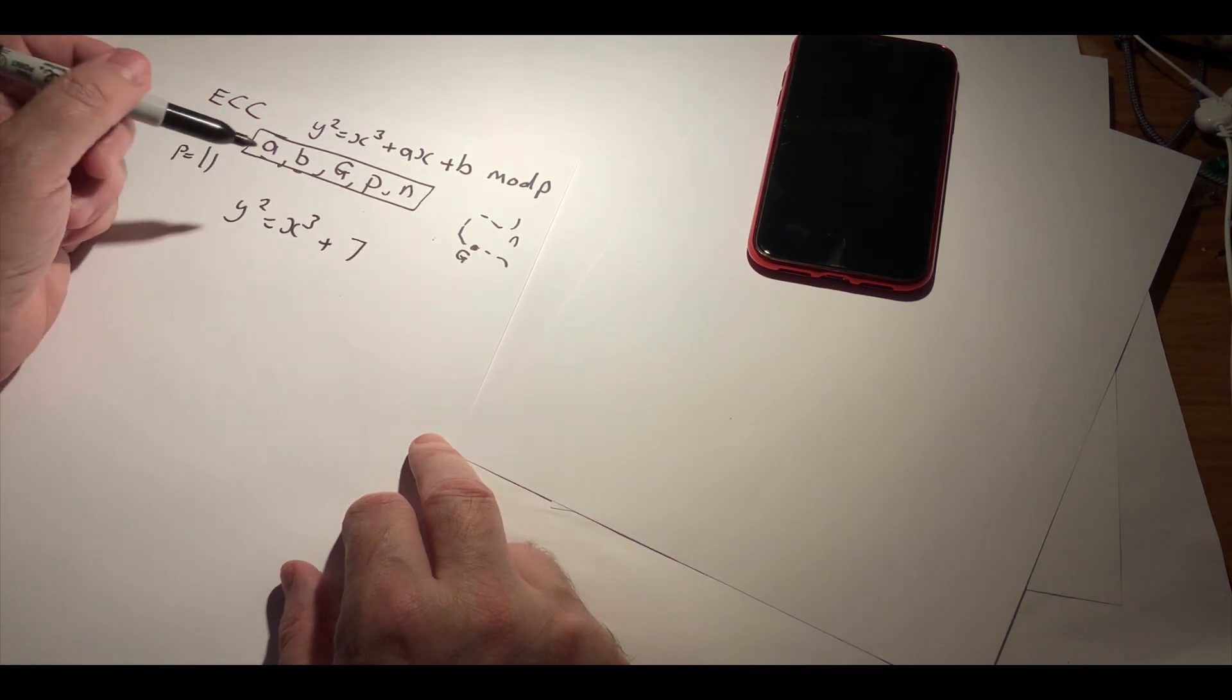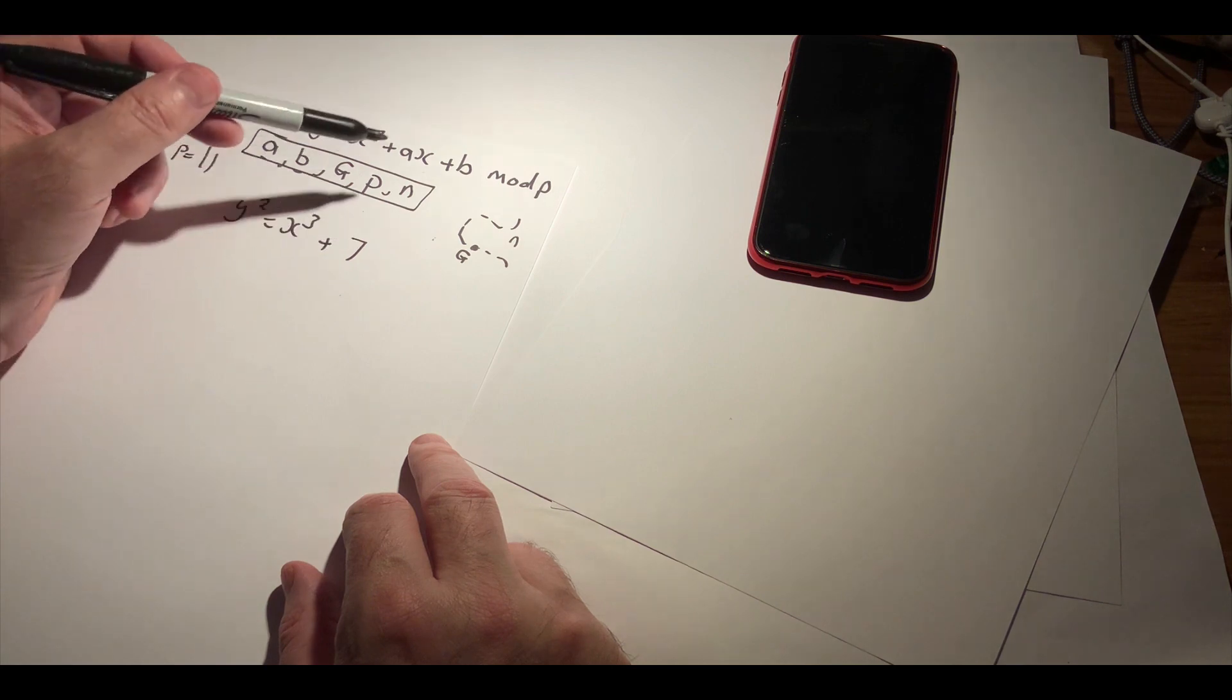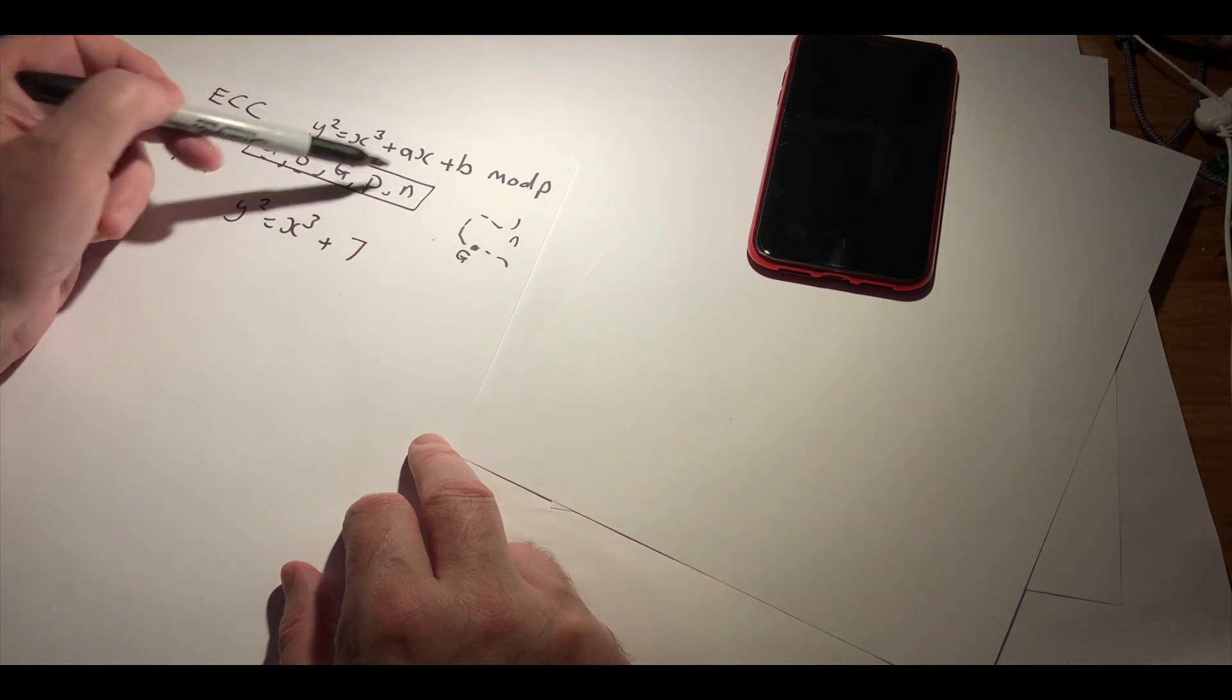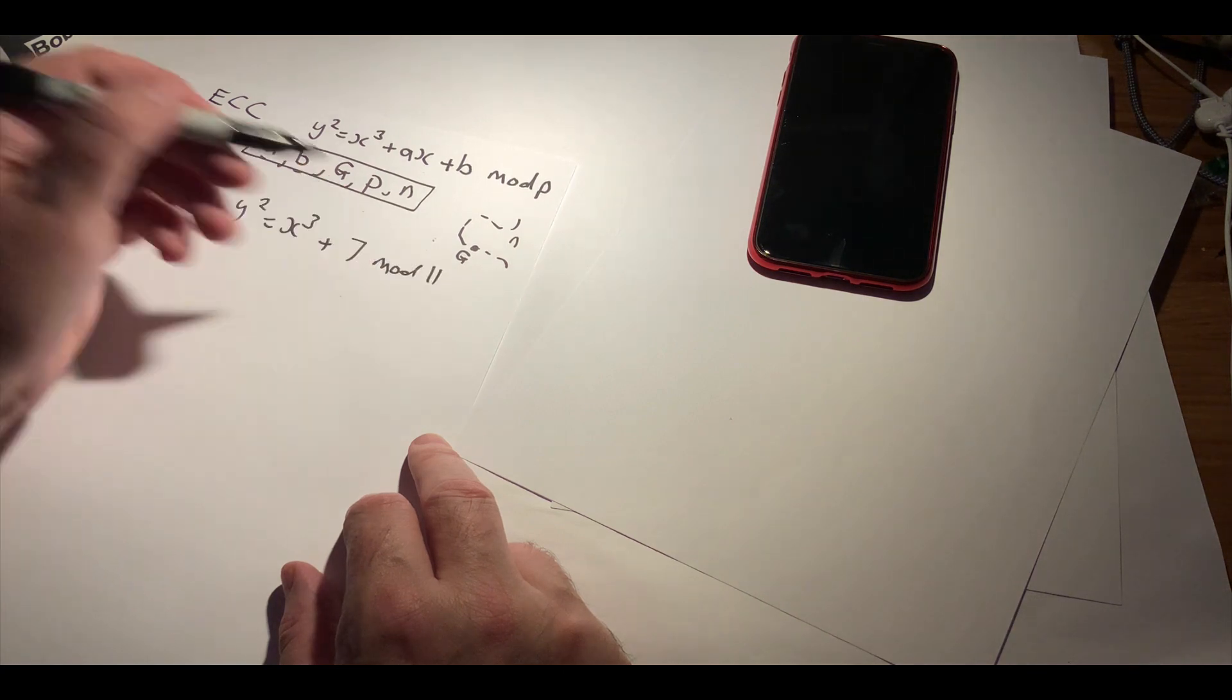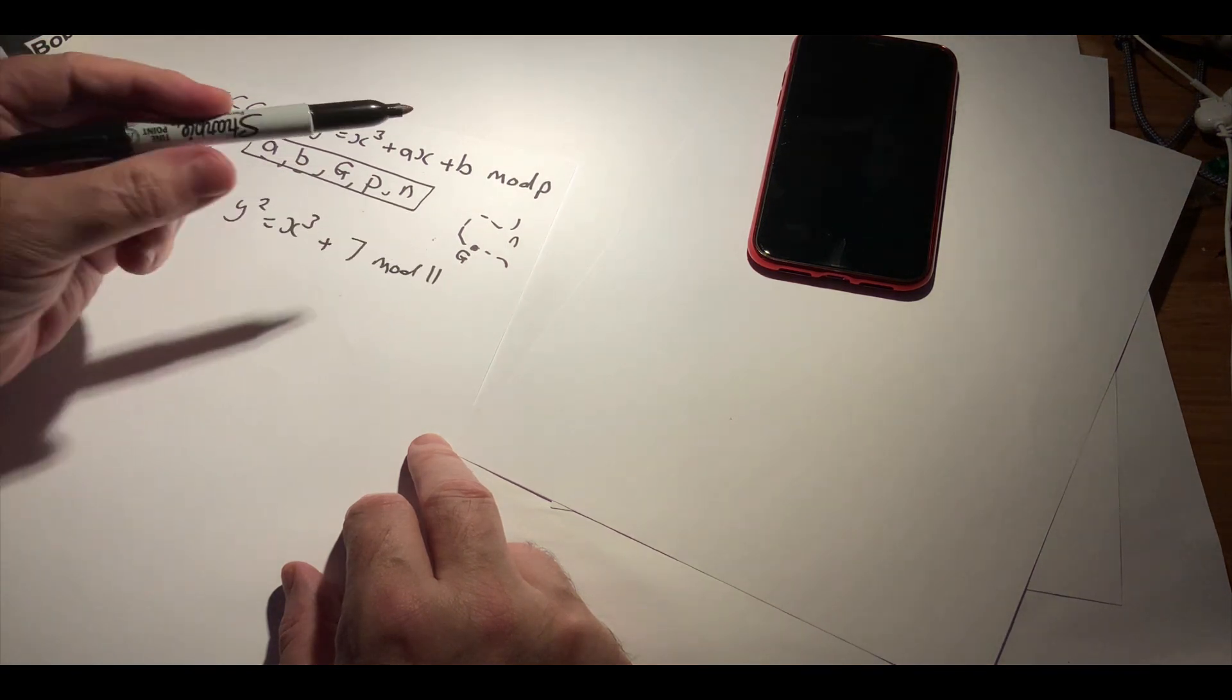We'll take a typical curve of 7 for b, 0 for a, and we'll take 11 for our prime number.